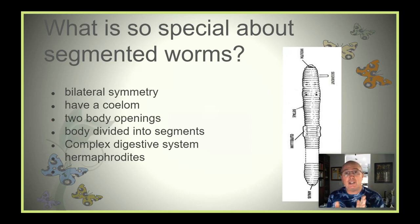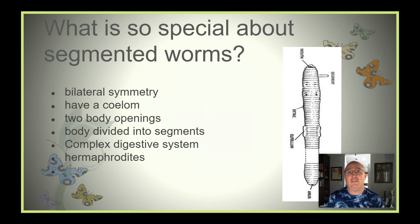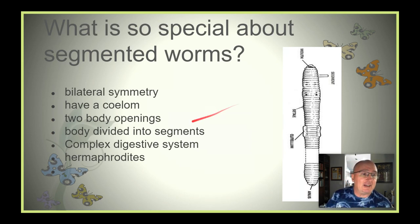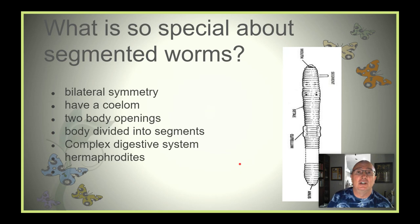They have two body openings — a mouth and an anus. So this is a complete digestive system, similar to ours. For the groups we already talked about, they didn't have anything quite this complex. And speaking of complex digestive systems, they have a lot of different structures in their digestive system.